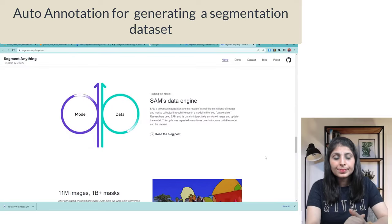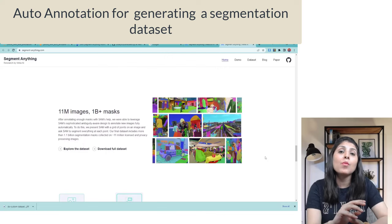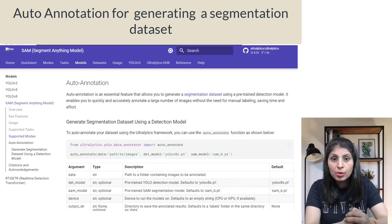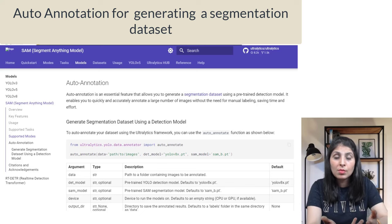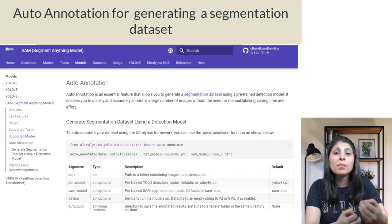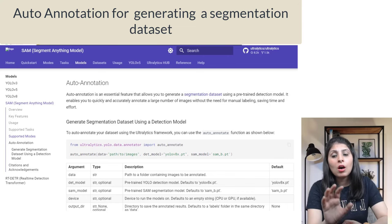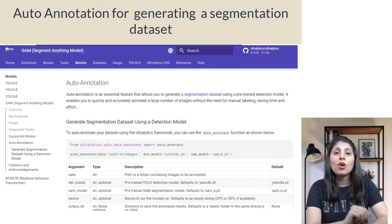Recently, Ultralytics implemented the SAM model in their Ultralytics package and created a feature called auto annotation. Using this feature, you can prepare image segmentation datasets automatically without any manual labeling. The only requirement is a pre-trained object detection model, which is used to create annotation files for segmentation tasks.